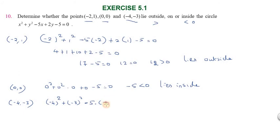Third point: (-4,-3). (-4)² + (-3)² - 5(-4) + 2(-3) - 5 = 0. 16 + 9 + 20 - 6 - 5 = 0.